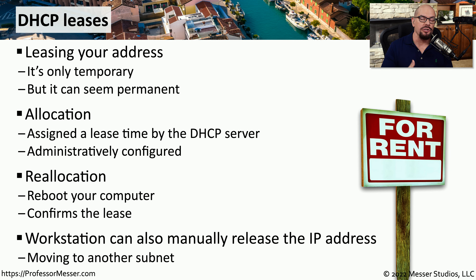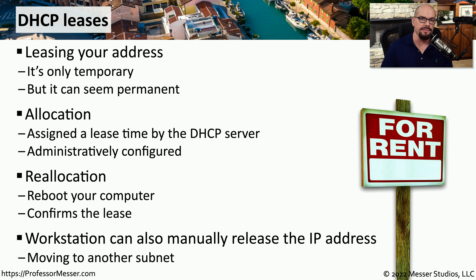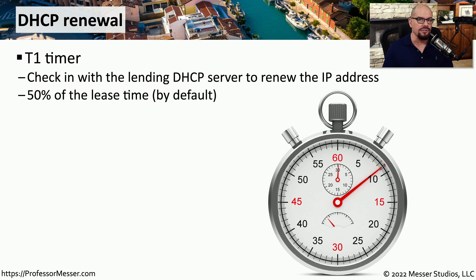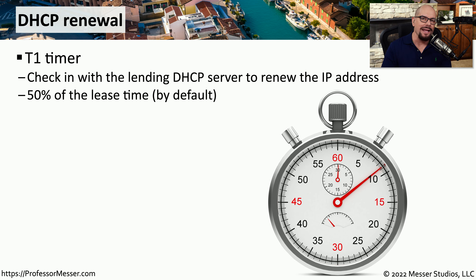There may also be times when you would like to administratively or manually release that IP address, hand it back to the DHCP server, and then either leave the network or request a new address from the DHCP server. When a device receives an IP address from a DHCP server, a timer starts that is the length of the lease time configured for that DHCP server. Once that lease timer has expired, that IP address is returned to the DHCP server and can be assigned to others. But during that lease process, there are other timers you should know about.